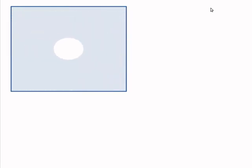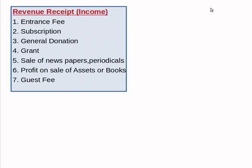A receipt and payment account usually begins with opening balance of cash and bank and ends with closing balance of cash and bank. All receipts of cash and bank are written on the debit side or receipt side, and all payments on the credit side or payment side. Another important point is the classification of receipts and payments into capital and revenue. Revenue receipts, that is income, include entrance fee, subscription, general donation, grant, sale of newspapers, periodicals, profit on sale of assets or books, guest fee, etc.